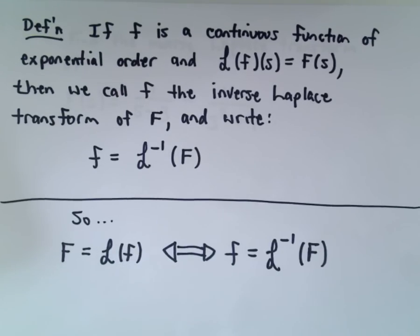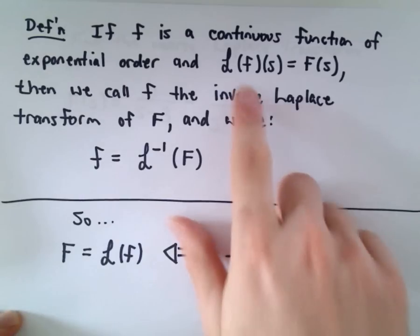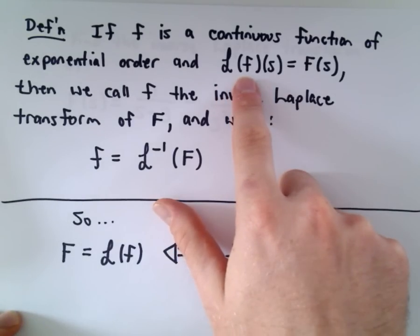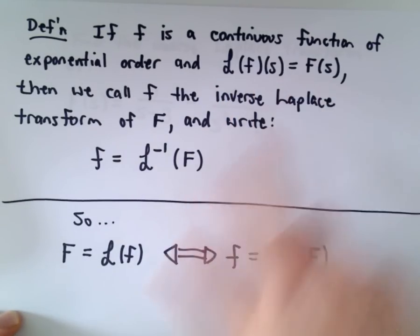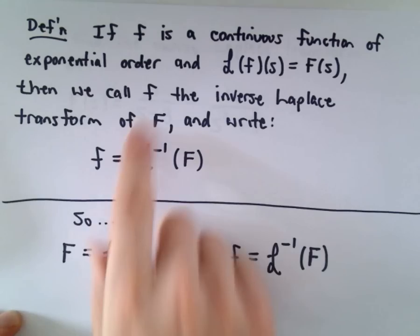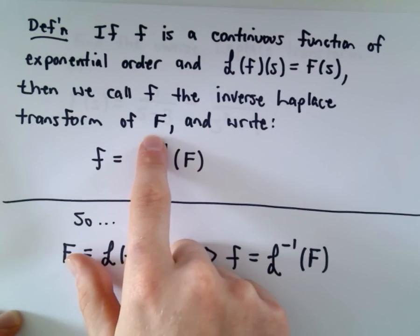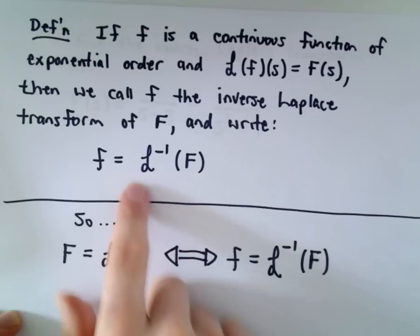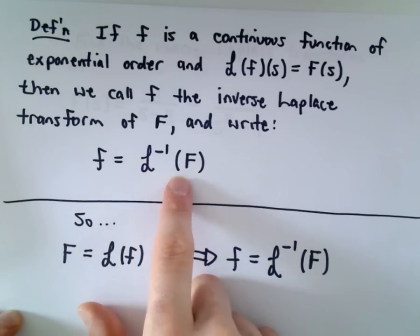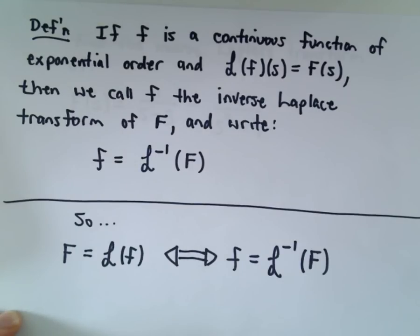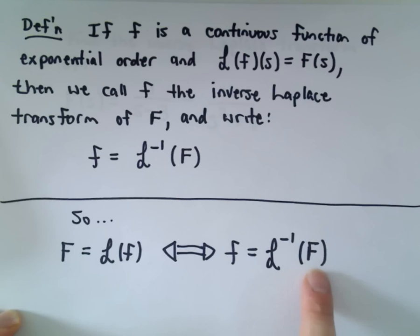So if f is a continuous function of exponential order and the Laplace transform of little f(s) equals capital F(s), we call little f the inverse Laplace transform of capital F and we denote it by writing f equals L to the minus 1 of capital F. So if the Laplace transform of little f is capital F, that means the inverse Laplace transform of capital F is going to give you little f back.